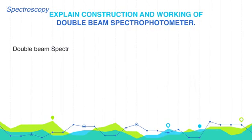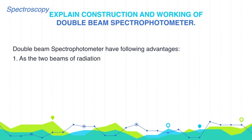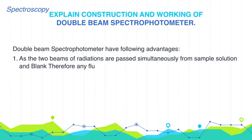Double beam spectrophotometer has following advantages over single beam spectrophotometers. As the two beams of radiations are passed simultaneously from the sample solution and blank, therefore any fluctuation in voltage can be compensated or cancelled.